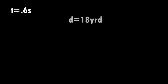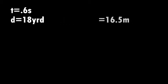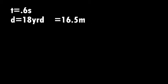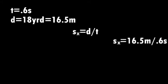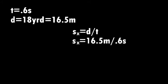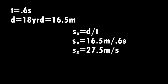At a distance of 18 yards, or 16.5 meters, I can now calculate my horizontal speed, which ends up being 27.5 meters per second.